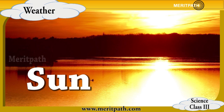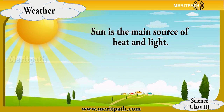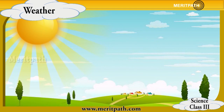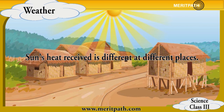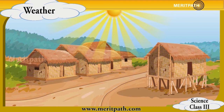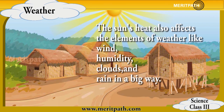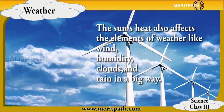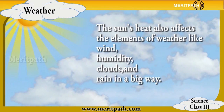The sun is the most important source of heat and light. The heat of the sun is received by all the people on earth. It is different at different places, and the weather condition of a particular place is greatly affected by the intensity of the sun's heat.